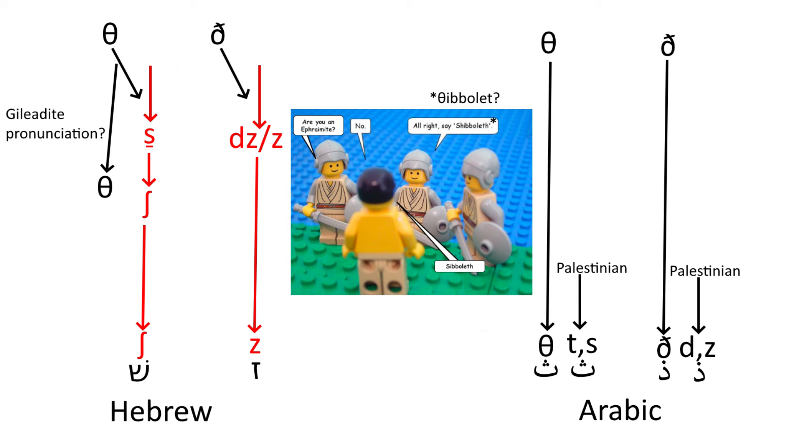and the Gileadites at some point still retained the Th pronunciation in Shibboleth. And thus, unlike the Gileadites, the Ephraimites lacked the Th sound, and the closest equivalent they could come up with was S. Just like how modern Hebrew or German speakers might pronounce English think as sink, presumably the writer of the story had no way of writing the Th sound, and so went with the letter Shin.